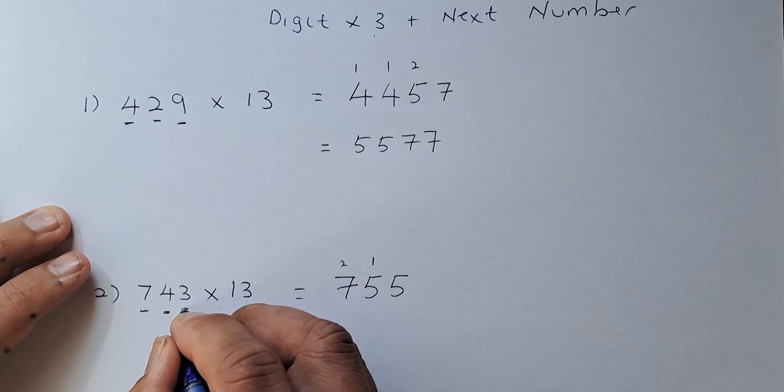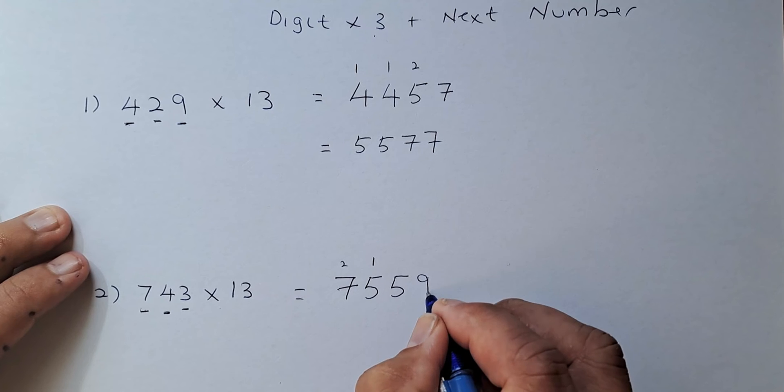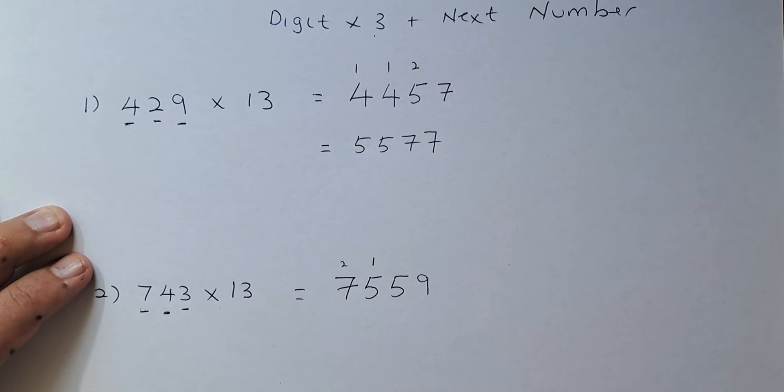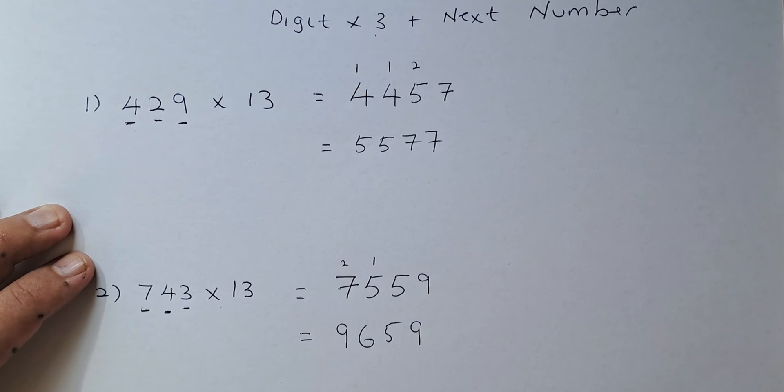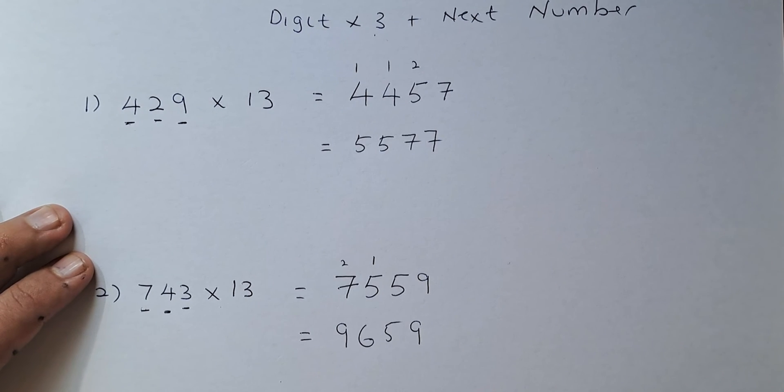And last but not least, we look at 3. 3 times 3 is going to be 9. And then we're going to add the numbers with the carry over. So 7 plus 2 is 9. 5 plus 1 is 6. 5, 9. So the answer is going to be 9,659.